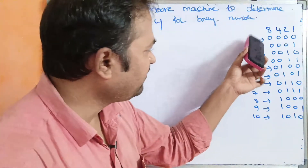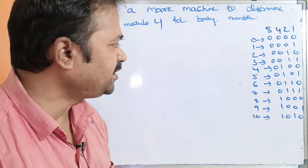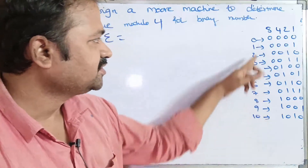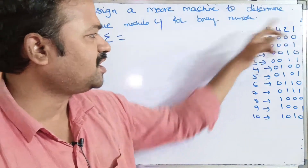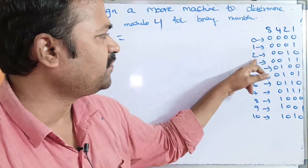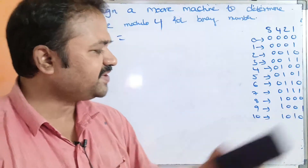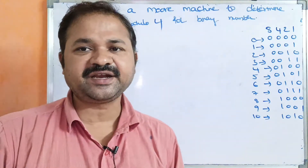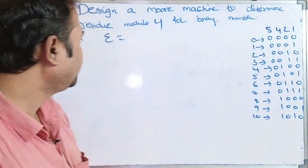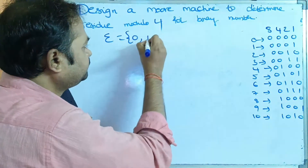We have represented the decimal digits from 0 to 10 in binary notation. So 0 means all zeros, 1 means 0001, 2 means 0010, and likewise up to 10. So sigma is equal to {0, 1}.